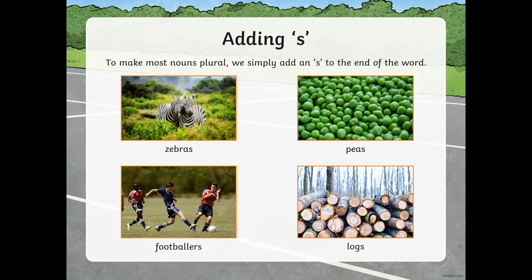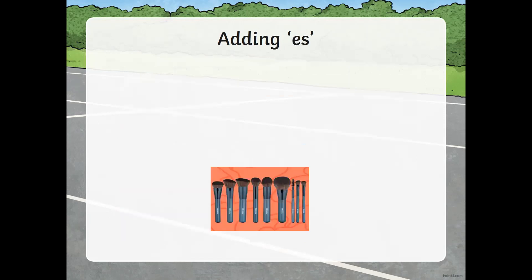Zebras, peas, football players, and logs — do you see how we added an S at the end? For most nouns we add S. We already know what nouns are: the name of a person, place, or thing.